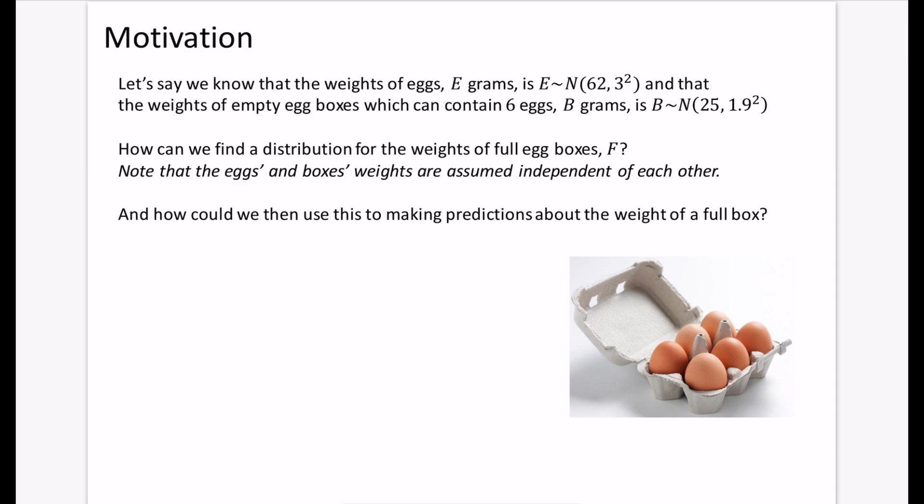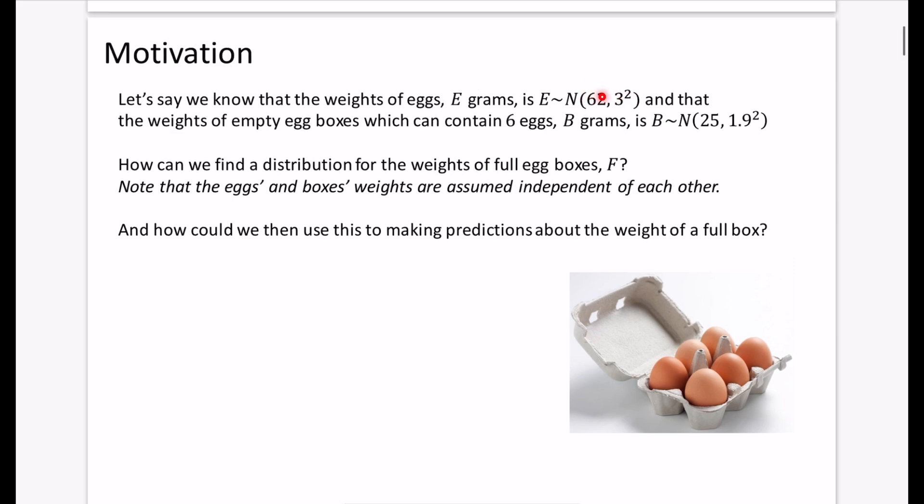So for our motivation here, let's say we know that the weights of eggs, e grams, is e is distributed normally with 62 and 3 squared. In other words, we know that the average weight of an egg is 62 and its variance is 9 or its standard deviation is 3.